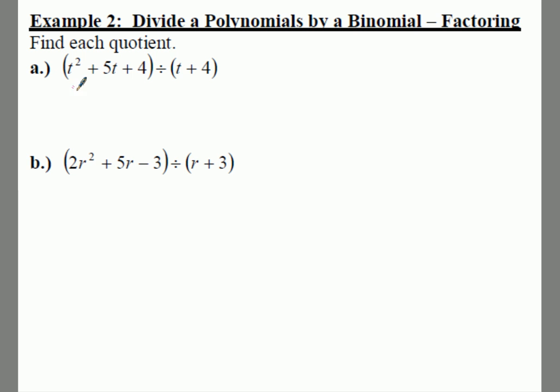So we've actually kind of done this before. The other way to write t squared plus 5t plus 4 divided by t plus 4 would be to write it like this. So what we can do is we can actually factor the top. The factors of 4 that add up to 5 would be t plus 1 and t plus 4.